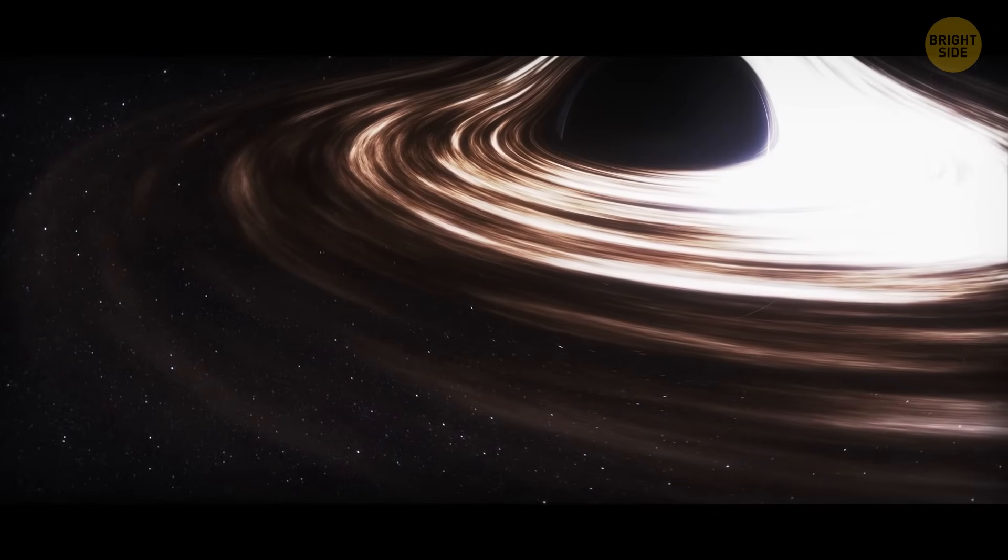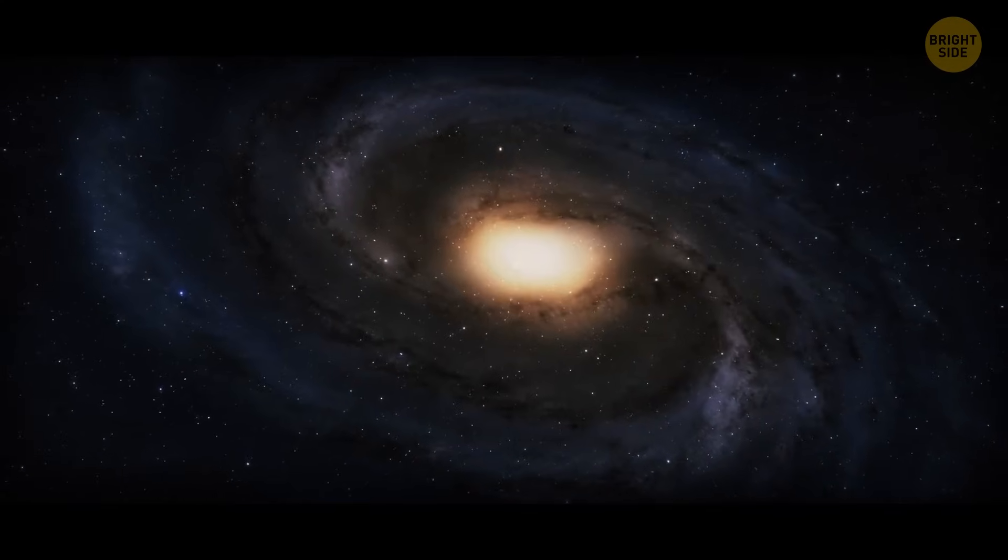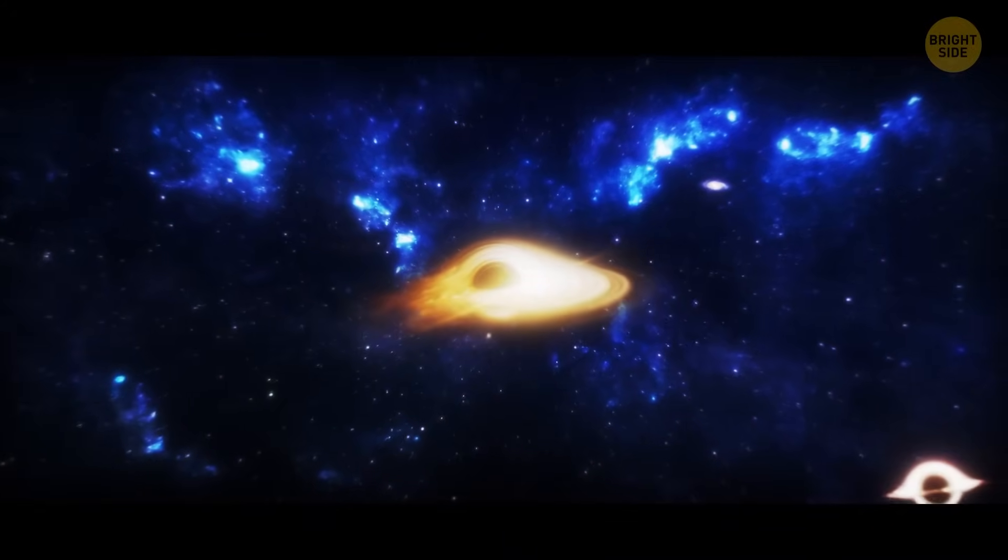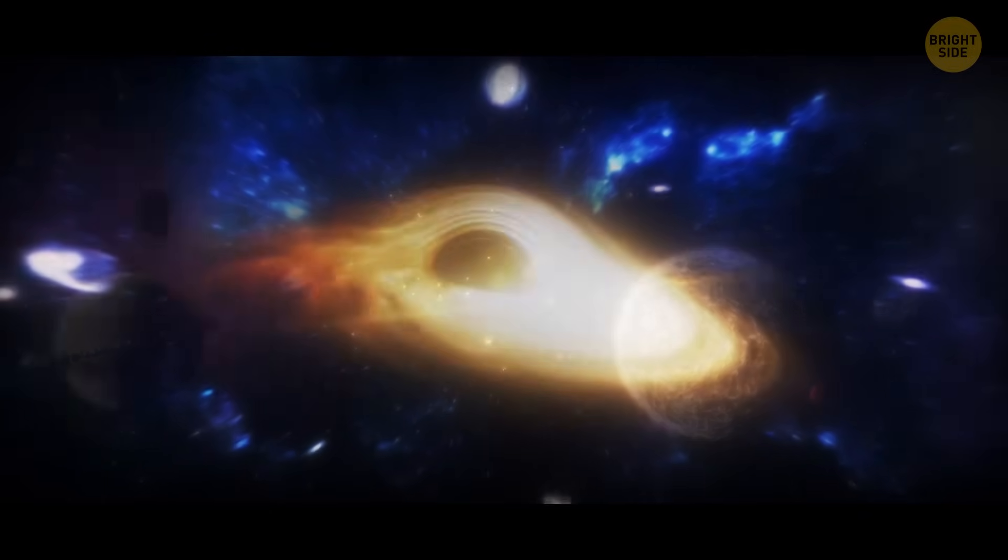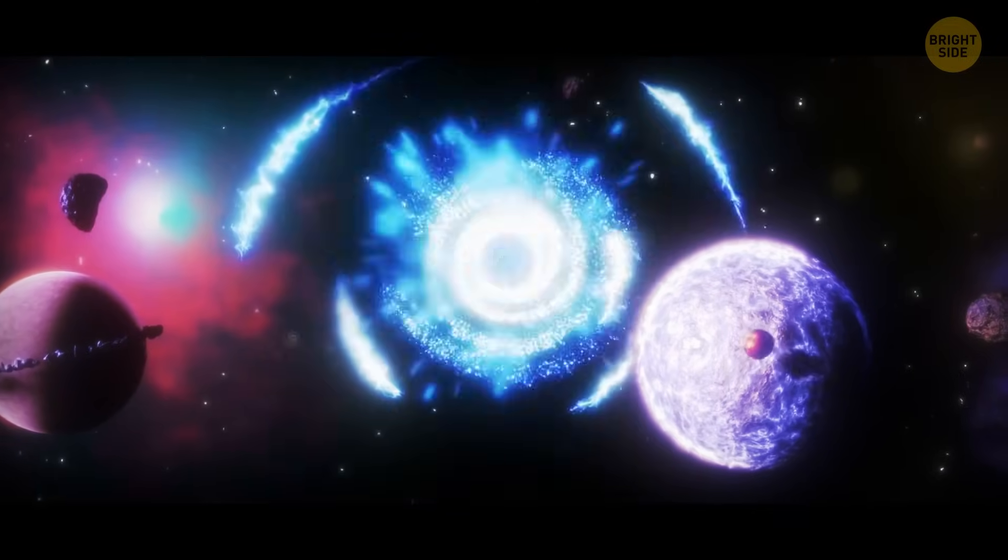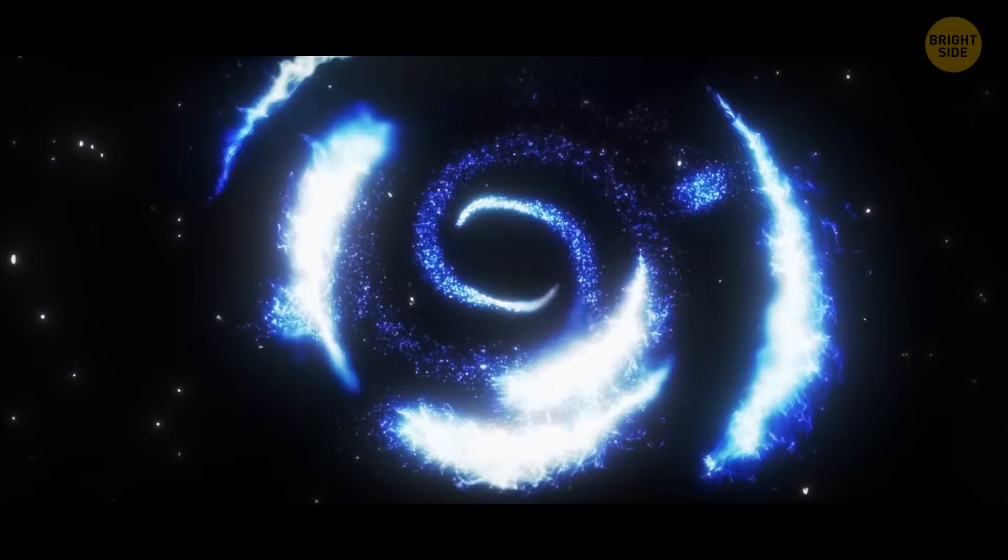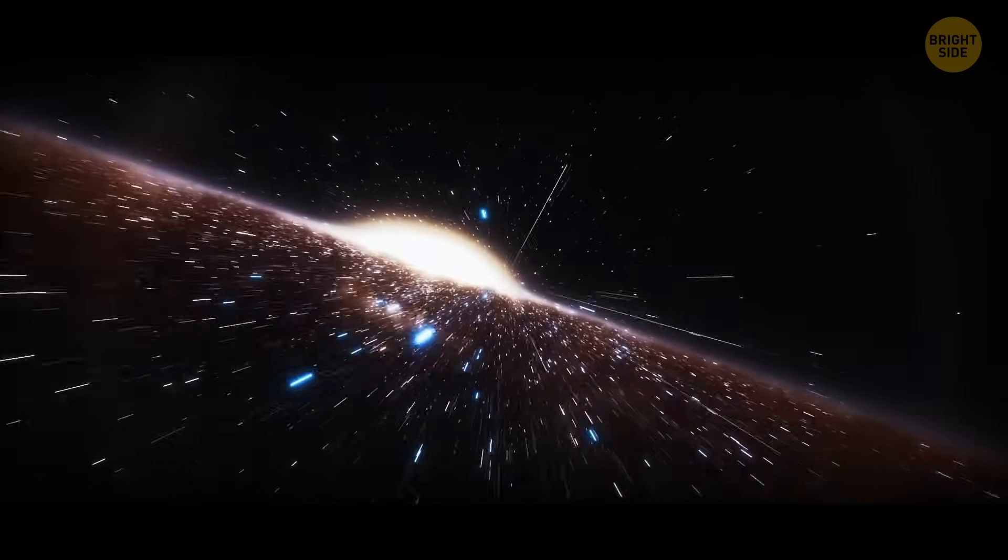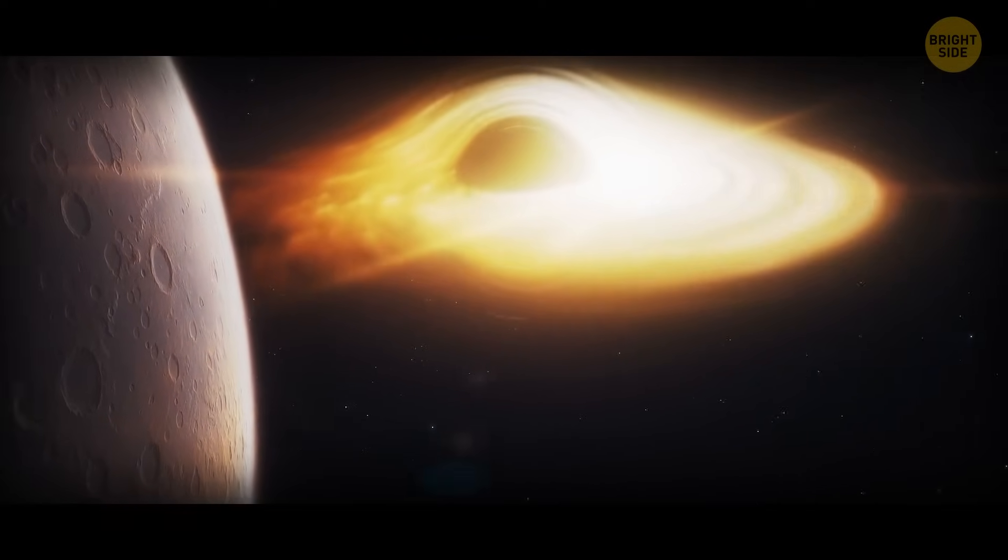There are supermassive black holes in the centers of all galaxies, including our very own Milky Way. These black holes are so massive that they warp space-time, causing nearby stars to orbit around them at incredible speeds. They serve as cosmic vacuum cleaners that suck in anything and everything that comes close enough. The black hole in our galaxy is called the Sagittarius A-star. Sounds like the name of a fancy Hollywood celebrity, doesn't it?